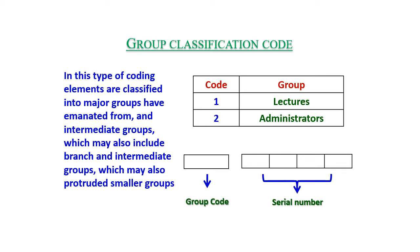Group classification code: elements are classified into major groups which may include intermediate and branch groups, which may further divide into smaller groups. For example, group code 1 for lecturers and group code 2 for administrators, each with their own serial number.